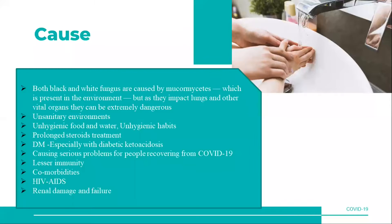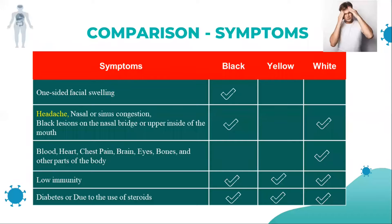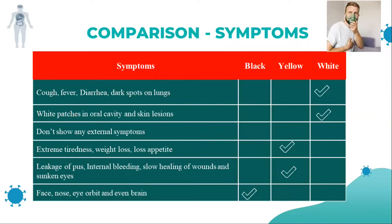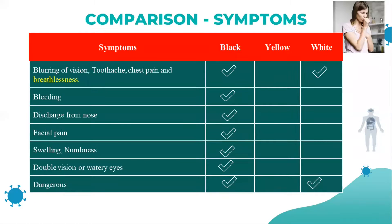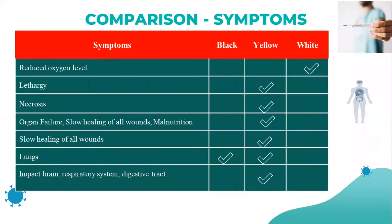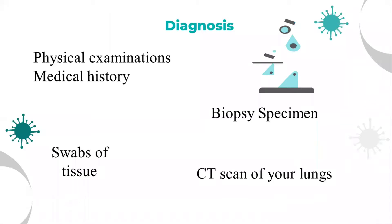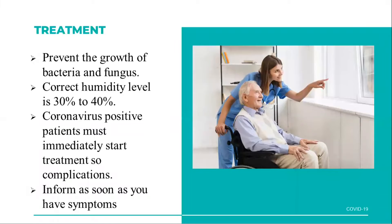We look at the causes and comparison of how black fungus and white fungus affect human beings — what body levels are affected, especially the face, respiratory system, GI system, and other organs. For diagnosis, physical examination, medical history, biopsies, and CT scan of the lungs are done.